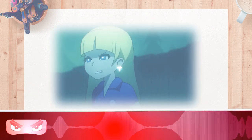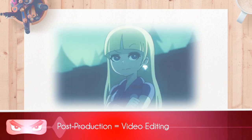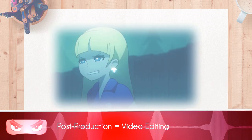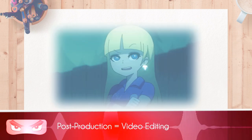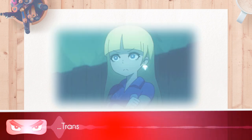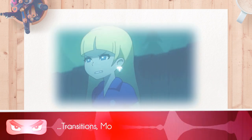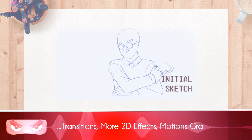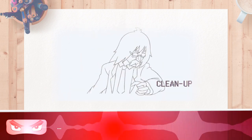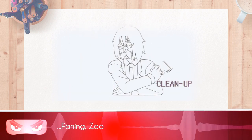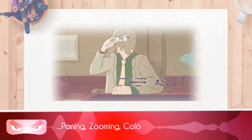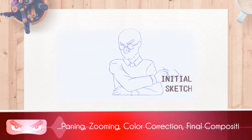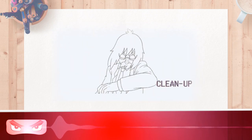The final phase is post-production. That's taking all the smaller snippets of animation, putting them together, adding transitions, adding 2D visual effects, motion graphics — so that's the panning, the zooming, the color correction — and then the final output. All of that is done in post-production.